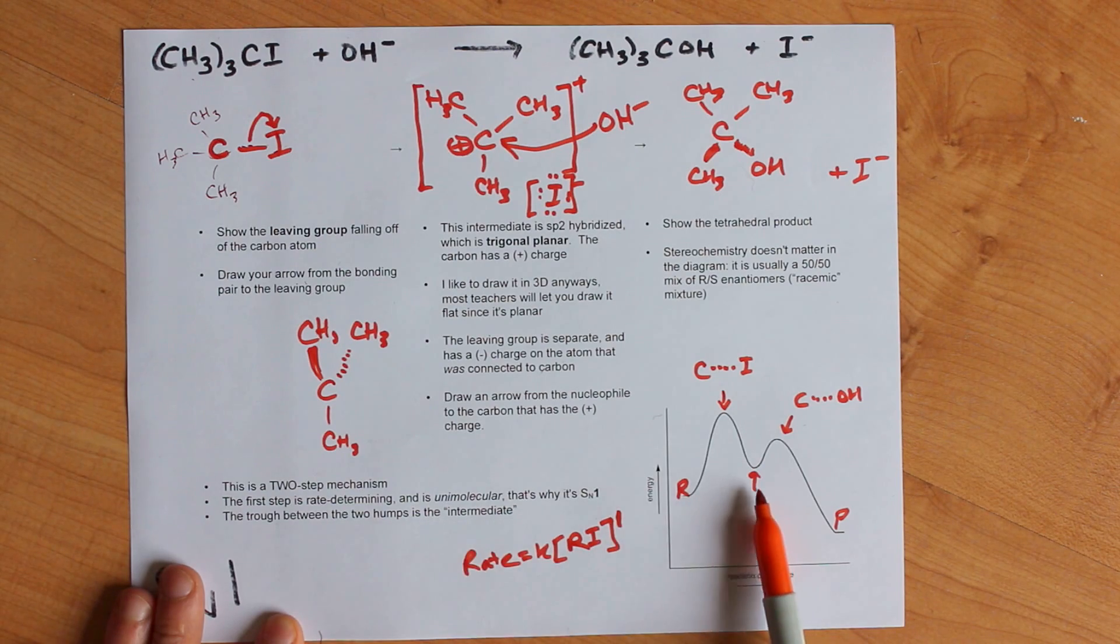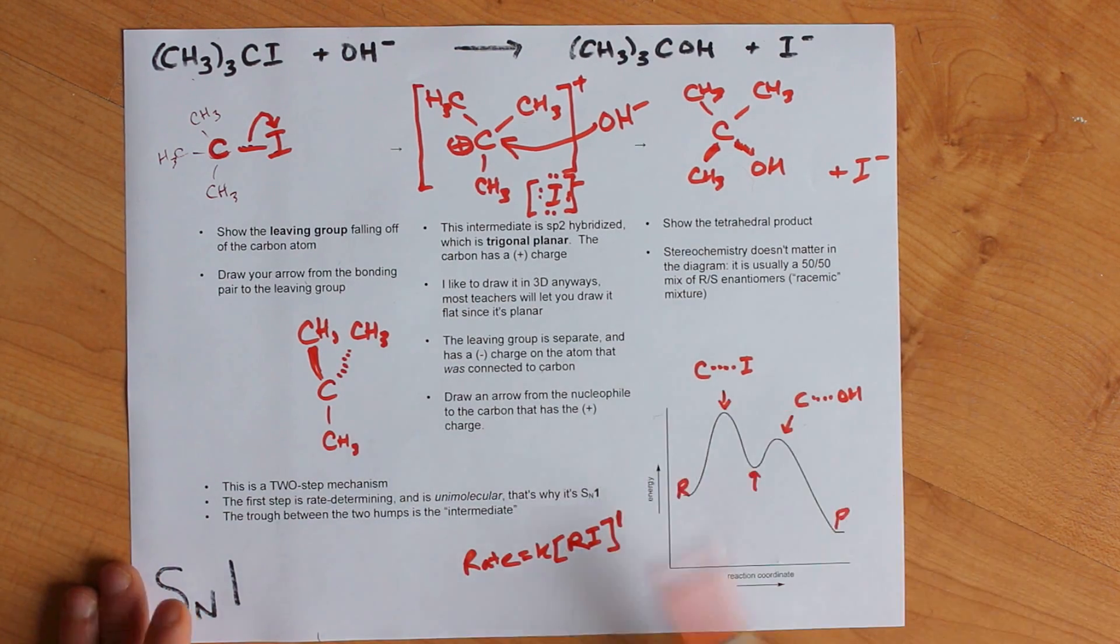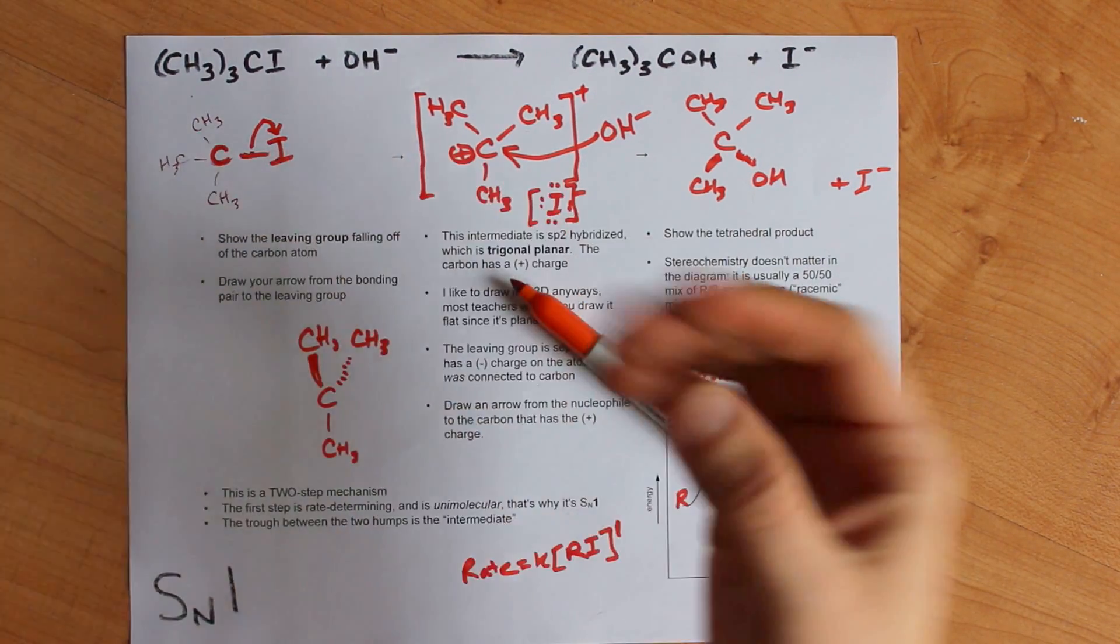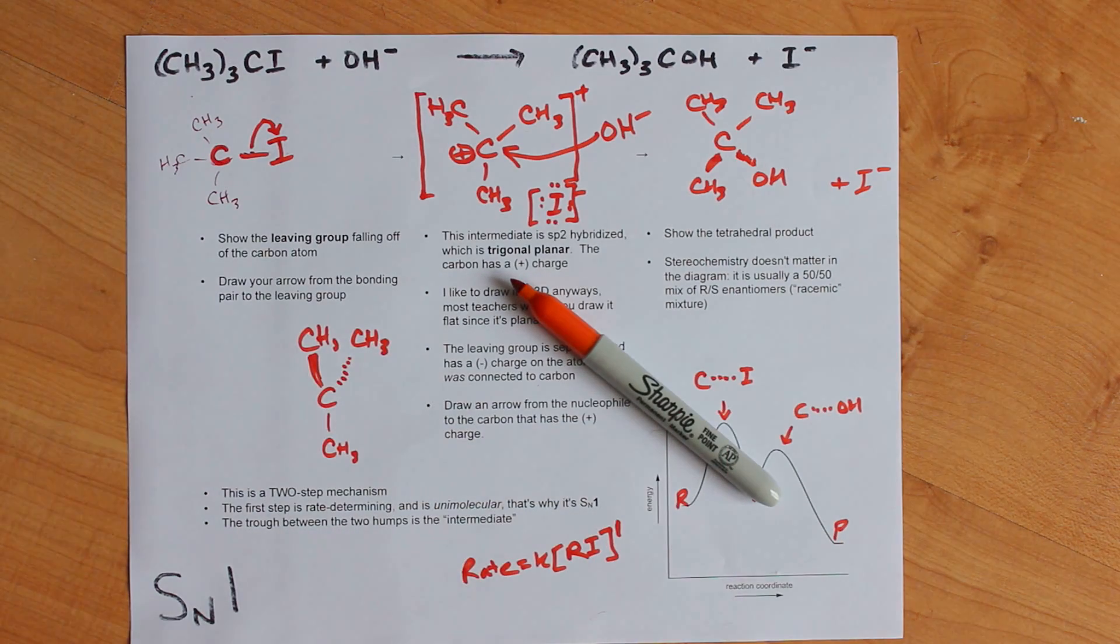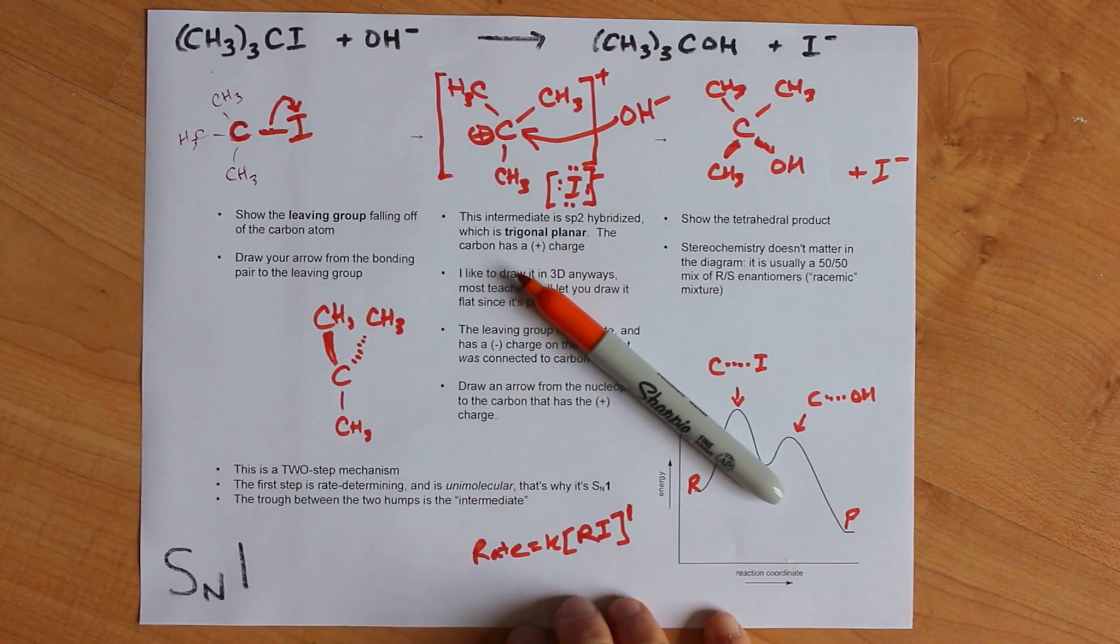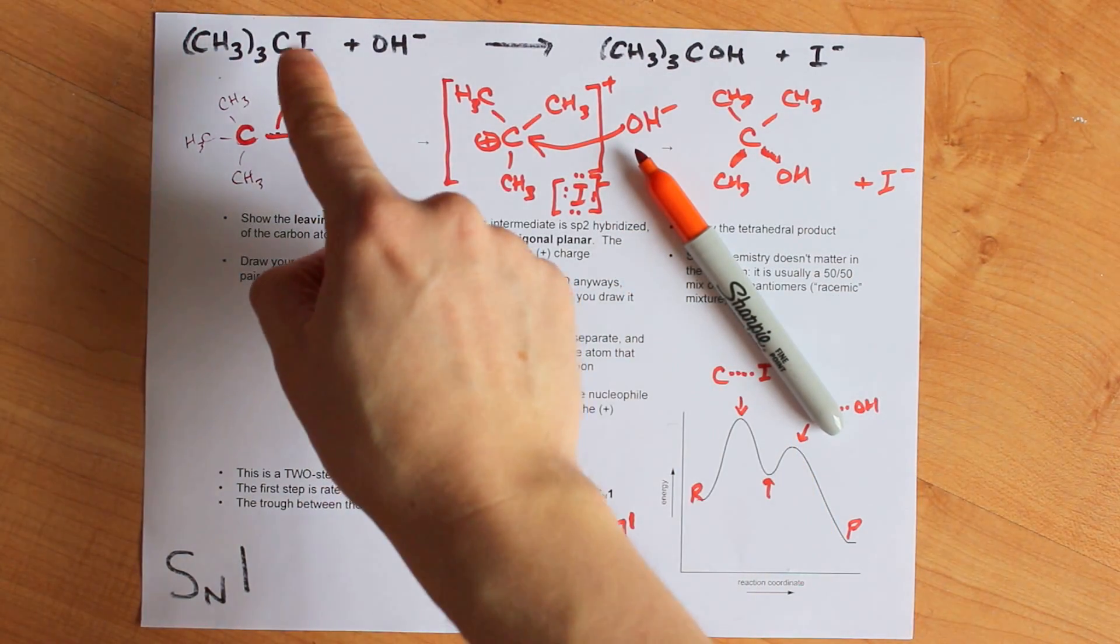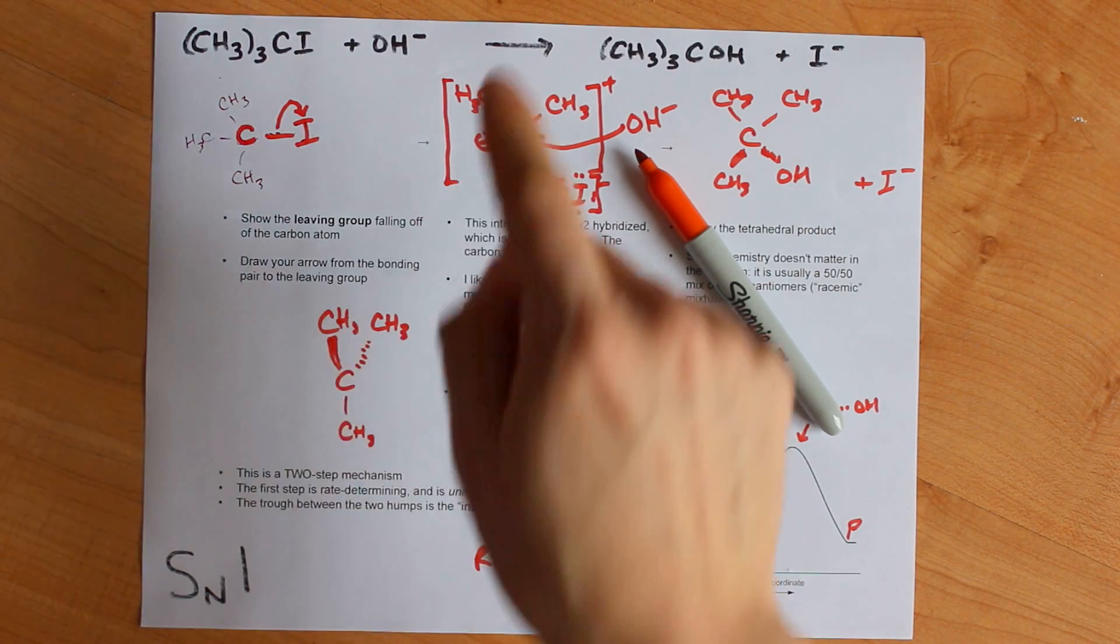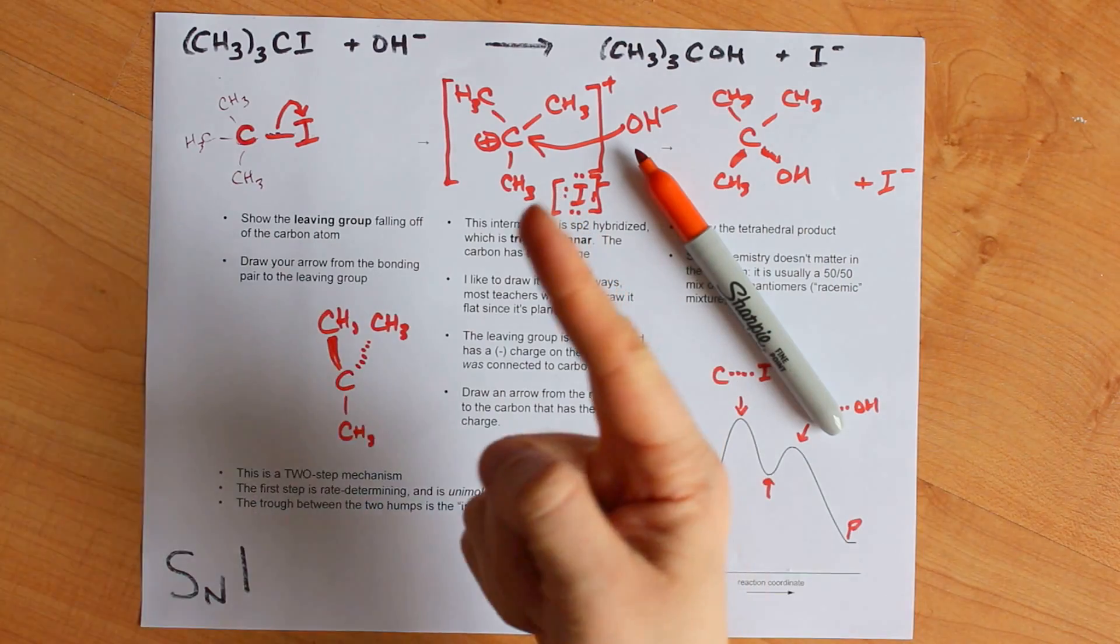I've already covered that the trough in here is for the intermediate, and beyond that, that's the end of what I'm talking about there. Hey, that's SN1. I have videos about SN2, E1, and E2 if you want to consider watching those, but otherwise SN1's pretty easy. Do a couple practices. Just let your leaving group fall right off, make a carbocation intermediate, and then let your nucleophile attack. Piece of cake. Best of luck.